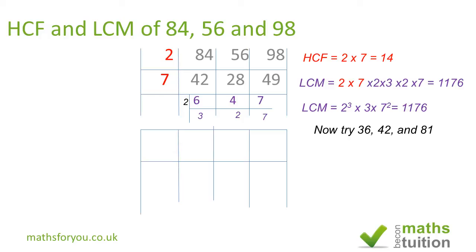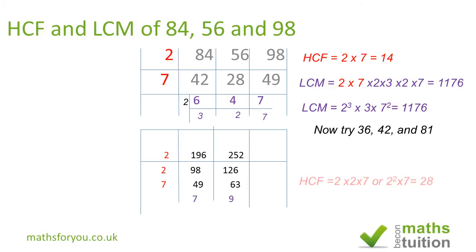Here's another example. If we divide 196 and 252 by 2 we end up with 98 and 126. Divide by 2 again and we end up with 49 and 63. Divide by 7 and we end up with 7 and 9. So the highest common factor of 196 and 252 is 2 times 2 times 7. Expressed as a product of prime factors, that's 2 squared times 7, which equals 28.